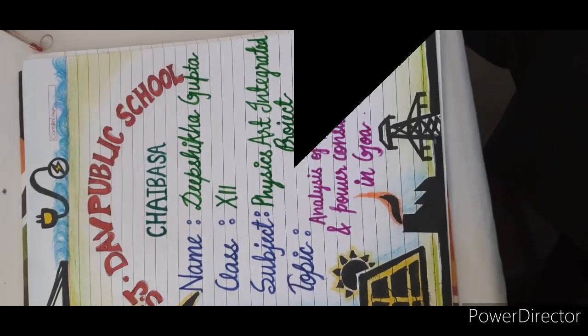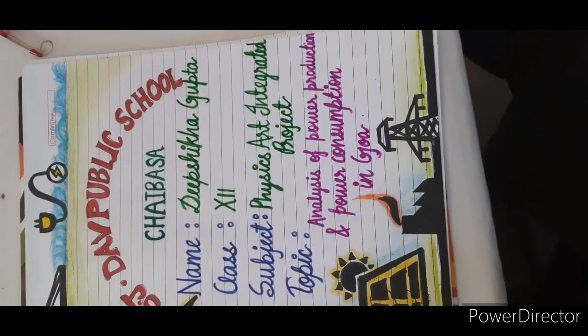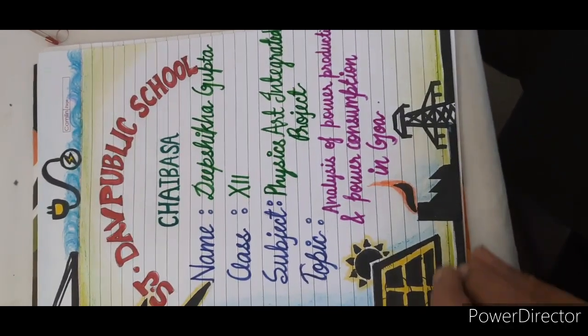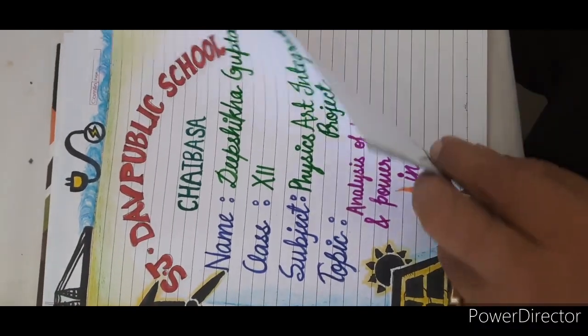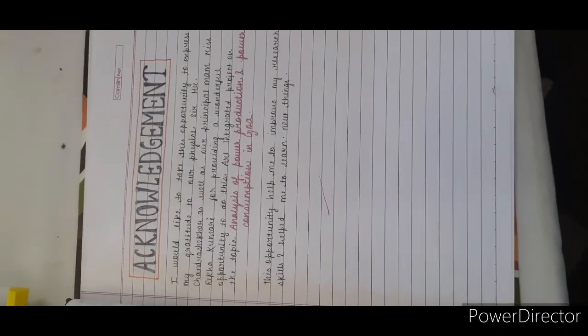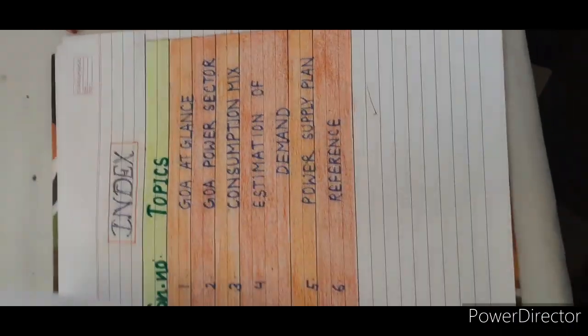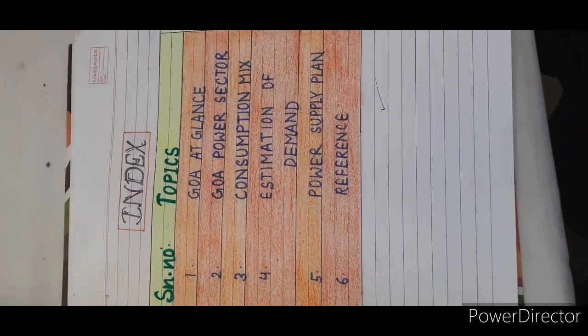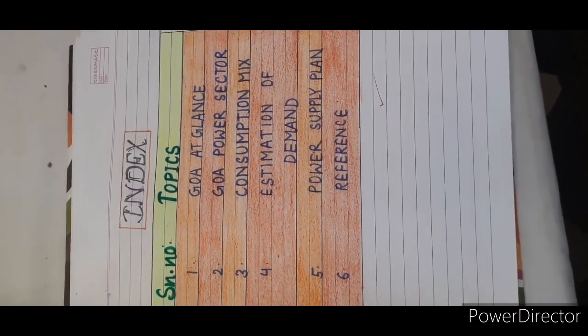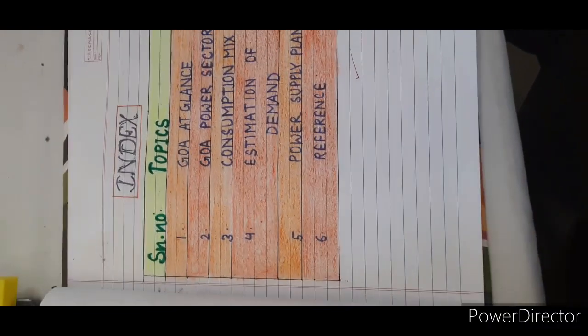This is a sample of an art-integrated project: the analysis of power production and power consumption in Goa, made by our student Deepshika Gupta. After the acknowledgement, comes the index. As you know, Goa and Jharkhand are paired this year, 2021.